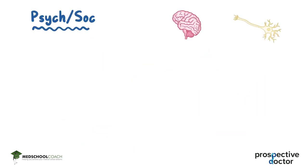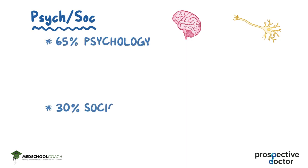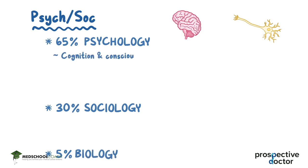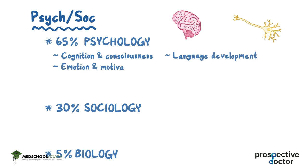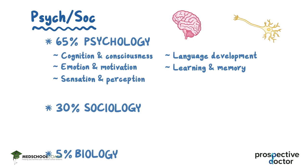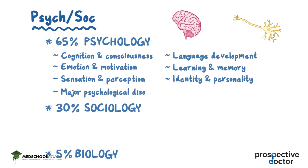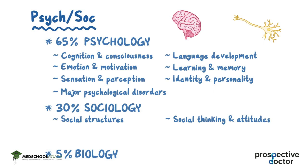Then there's the Psych-Soci section, which consists of 65% Psychology, 30% Sociology, and 5% Biology. Topics include Cognition and Consciousness, Language Development, Emotion and Motivation, Learning and Memory, Sensation and Perception, Identity and Personality, and Major Psychological Disorders. Sociology topics focus on social structures, social thinking and attitudes, as well as societal stratification and inequality.